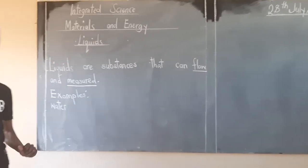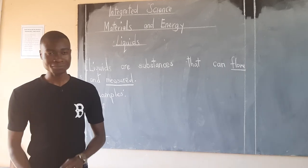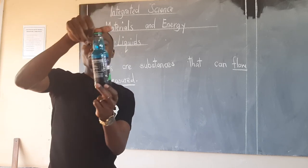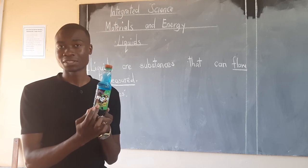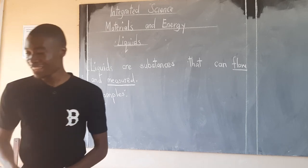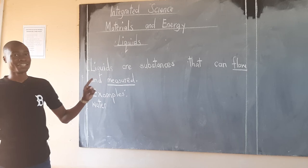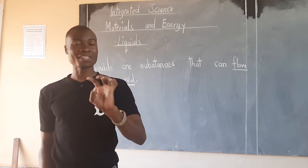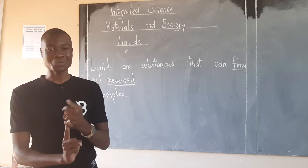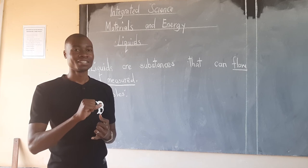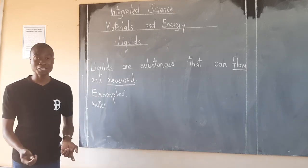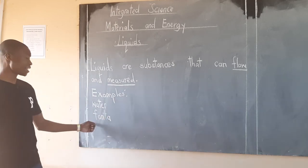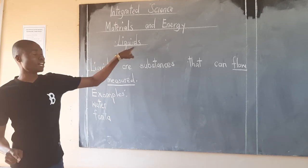Apart from water, anything that can flow and be measured qualifies as a liquid. Let me put it in this way: anything that you can drink is a liquid. What are some of the substances that you are able to drink? You said number one, water. What other examples do you think can be drunk? If we talk of a drink called Fanta — Fanta is a drink and it is in form of a liquid. So Fanta qualifies to be a liquid as well.